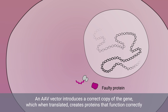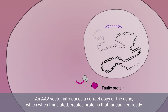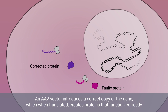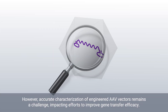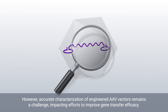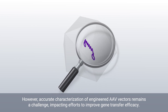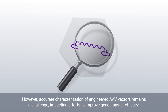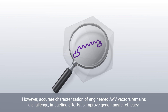An AAV vector introduces a correct copy of the gene, which when translated creates proteins that function correctly. However, accurate characterization of engineered AAV vectors remains a challenge, impacting efforts to improve gene transfer efficacy.